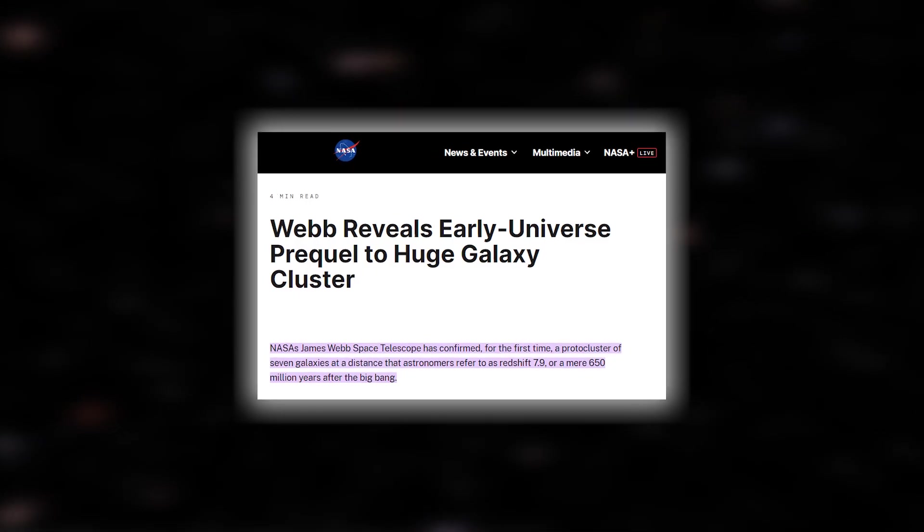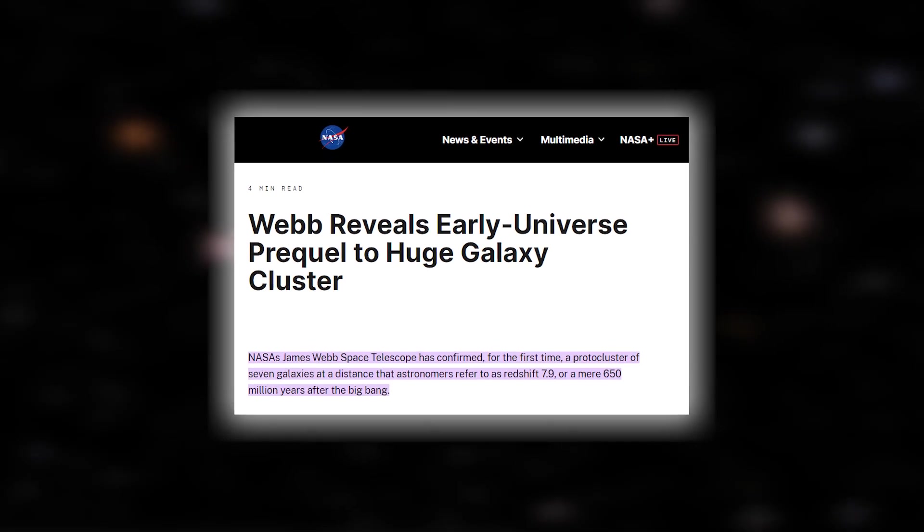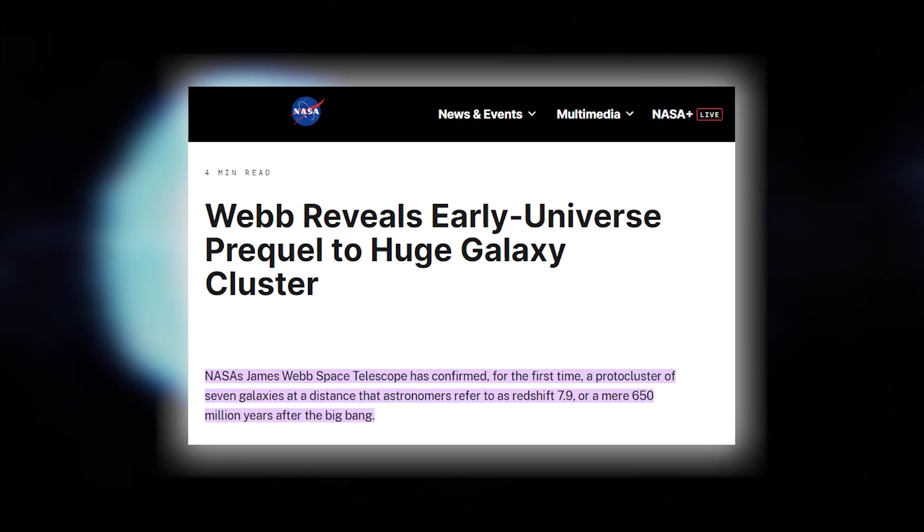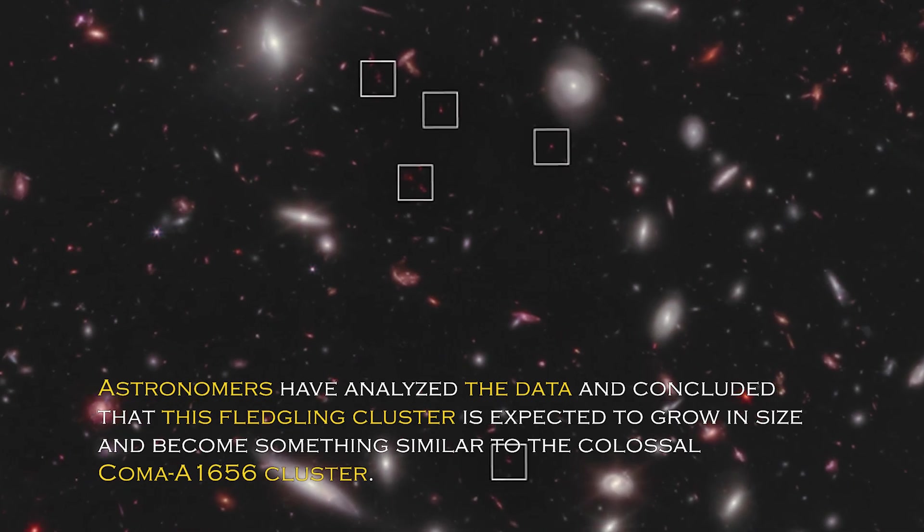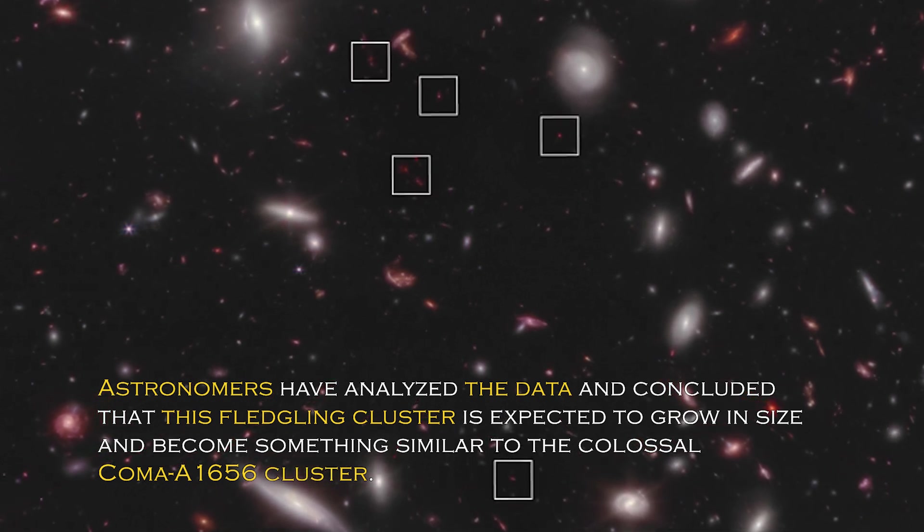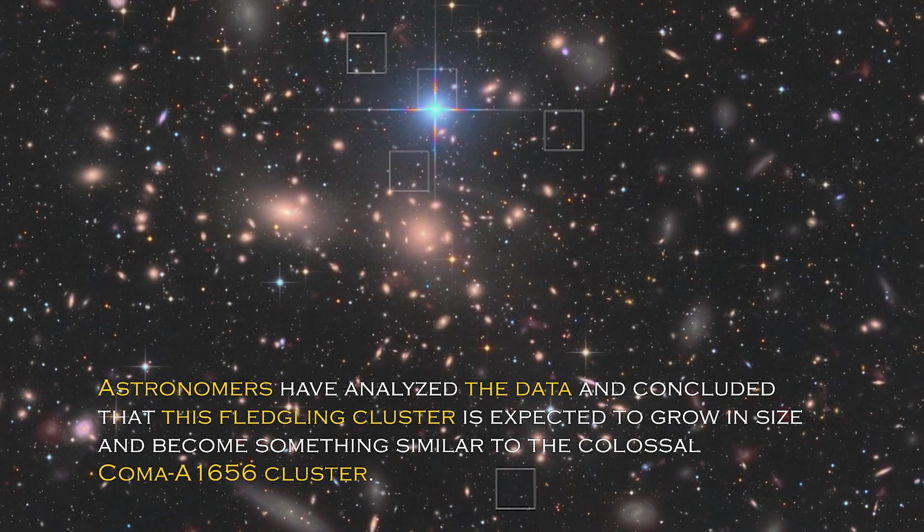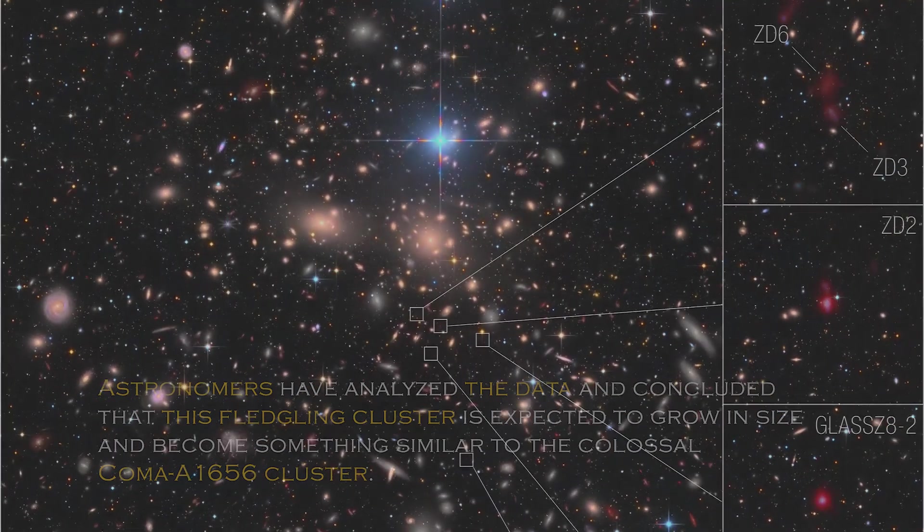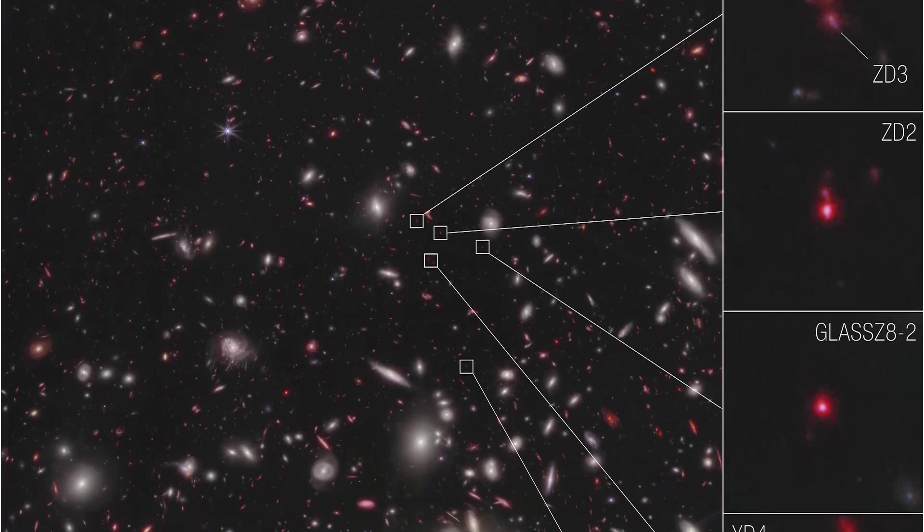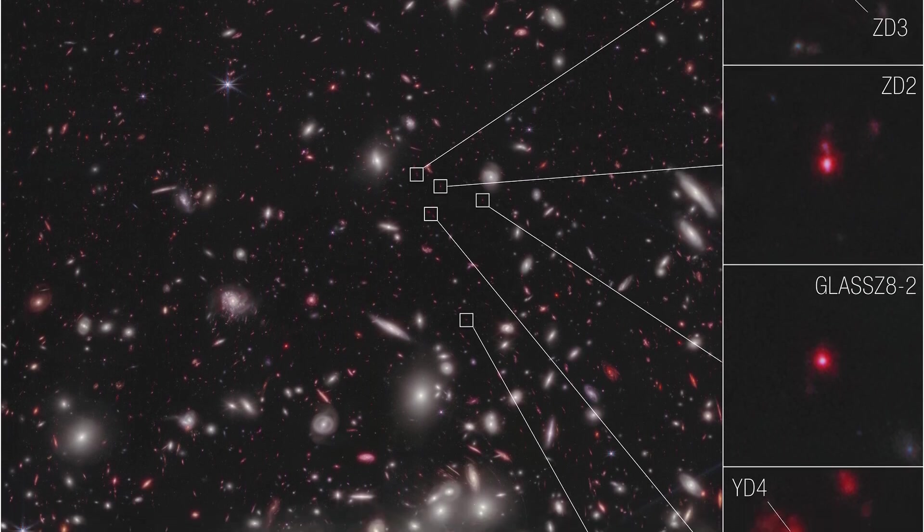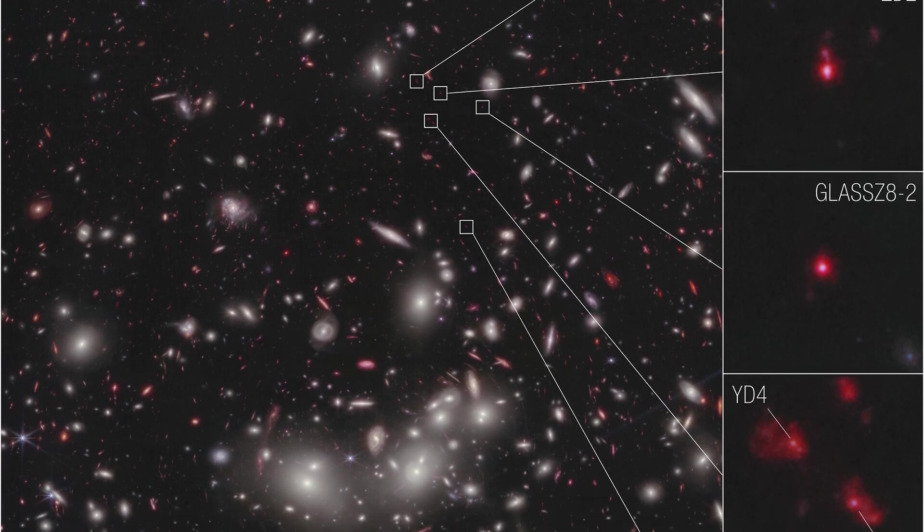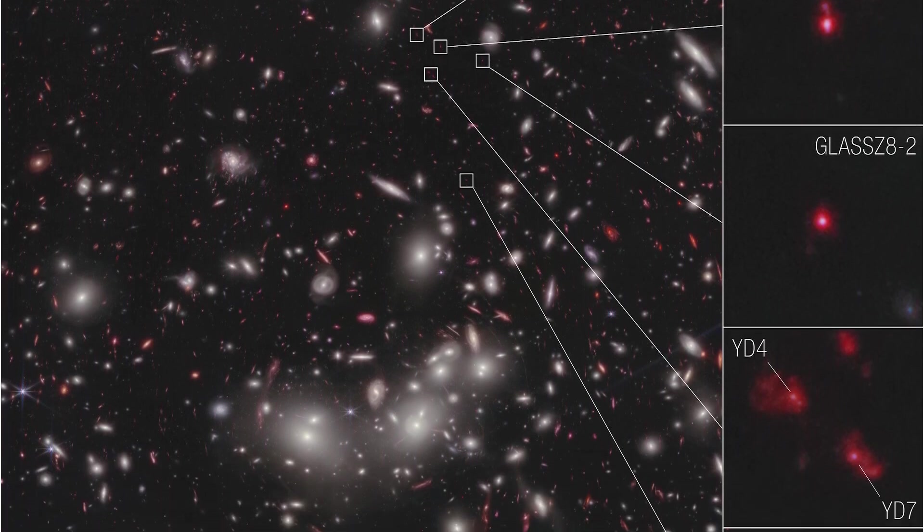Despite this, NASA recently tweeted about a galaxy cluster that lies just 650 million years after the Big Bang, adding another intriguing piece to the puzzle. Astronomers have analyzed the data and concluded that this fledgling cluster is expected to grow in size and become something similar to the colossal Coma A1656 cluster. The place where all this is taking place is unique, as it is in an area of accelerating galactic evolution. Now researchers can measure the velocities of these seven galaxies, which gives them the confidence to confirm that they are bounded together in a protocluster.